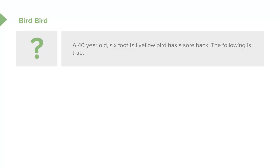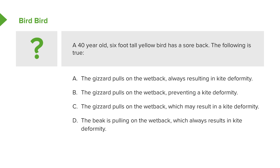Now let's do another one. This is a nonsensical question that strategic students were able to answer correctly 50% of the time. A 40-year-old six-foot-tall yellow bird has a sore back. The following is true: A: the gizzard pulls on the wetback, always resulting in a kite deformity. B: the gizzard pulls on the wetback, preventing a kite deformity. C: the gizzard pulls on the wetback, which may result in a kite deformity. D: the beak is pulling on the wetback, which always results in a kite deformity. Of course this question means nothing — it's nonsense. But you can see that C has a fuzzifier in it — it has the word 'may' — and generally speaking, that's going to be the correct answer.